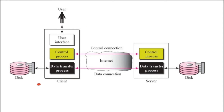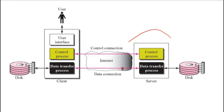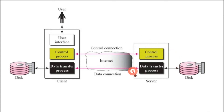Let's have a look at this figure of FTP connection. The first one is our client and the second one is our FTP server. The client side has three components: the first component is the user interface, the second is the control process, and the third is the data transfer process. The server side similarly has three components: control process, data transfer process, and user interface.